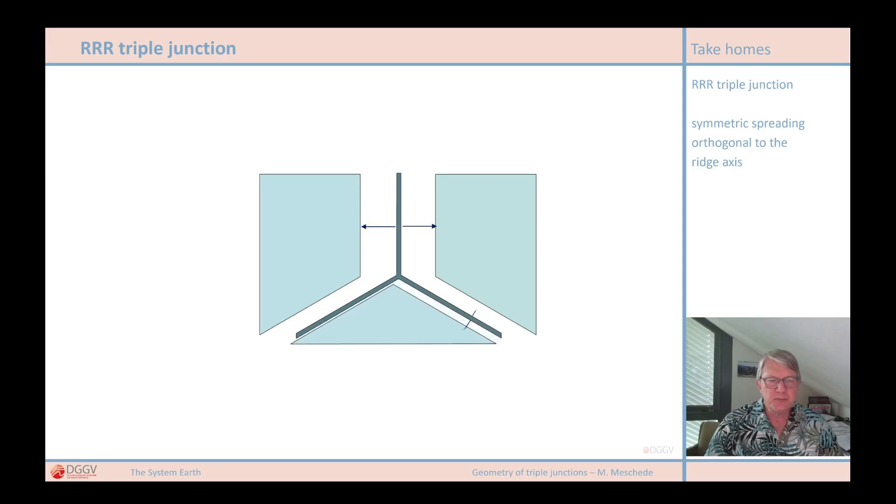This will become even clearer if we now try to perform the spreading at one of the lower segments, again perpendicular to the ridge axis. This results in a completely irregular and unsatisfactory result for the remaining ridge because spreading would not occur here symmetrically.